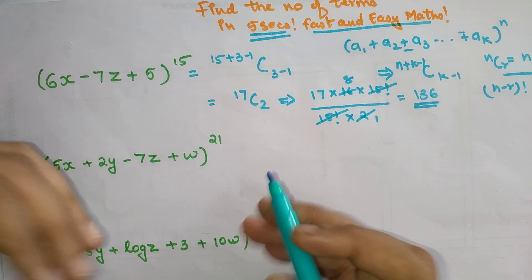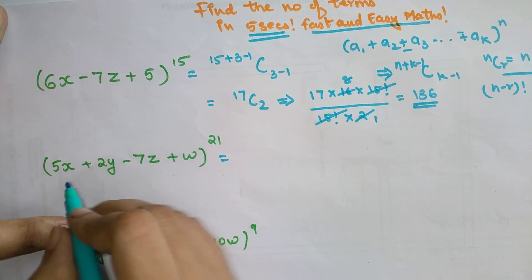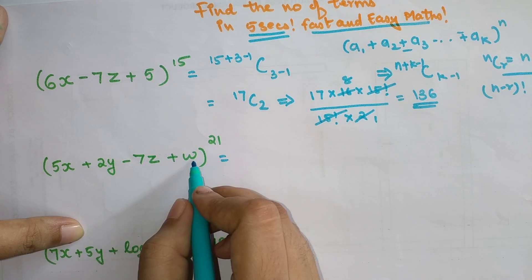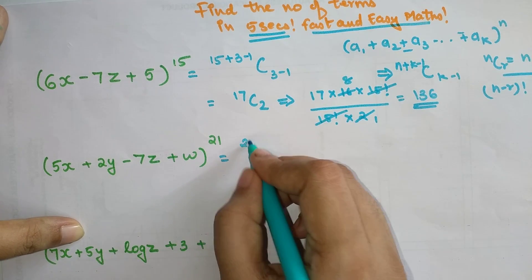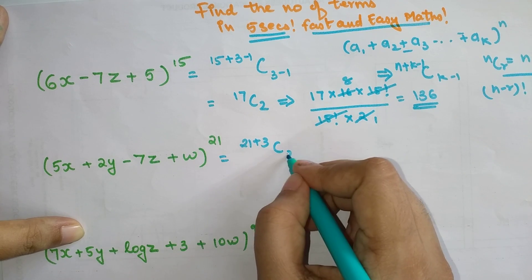Over here, now we are going to check for this term. This expression, we have how many terms? One, two, three, and four. So we will do 21+4-1 is +3, and C3.